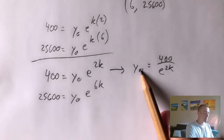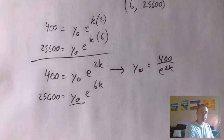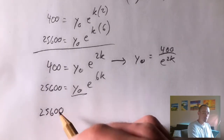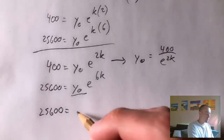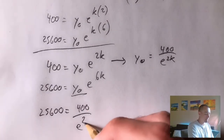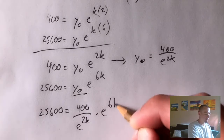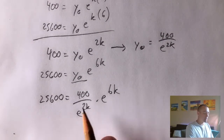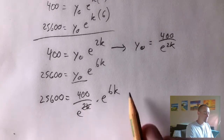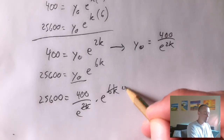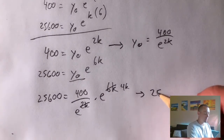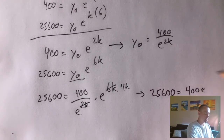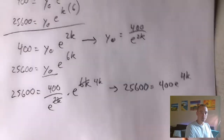Now we take this Y sub zero and plug it into our other equation, giving us 25,600 equals 400 over E to the 2K, times E to the 6K. The E to the 6K divided by E to the 2K simplifies — the 2K cancels with two of the K's — and we just get E to the 4K. So this tells us that 25,600 equals 400 times E to the 4K. Then we can just solve this equation for K.